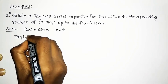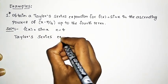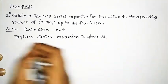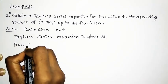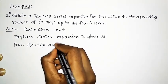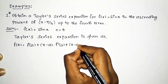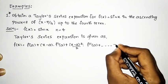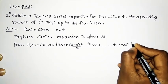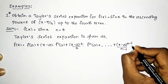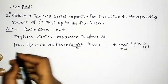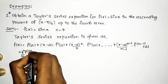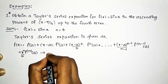First, we shall write the Taylor series expansion. The Taylor series expansion is given as: f(x) = f(a) + (x - a)·f'(a) + (x - a)²/2·f''(a) + ... up to the nth term, that is (x - a)^(n-1)/(n-1)·f^(n-1)(a), plus the nth term (x - a)^n/n·f^n(a). This is the Taylor series expansion.